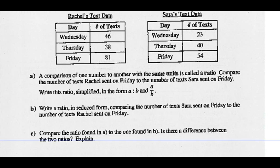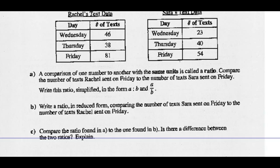So here's Rachel's and Sarah's text data. A says a comparison of one number to another with the same units is called a ratio. Same units, that's a ratio. Compare the number of texts Rachel sent on Friday to the number of texts Sarah sent on Friday and write this in the form A to B and in fractional form. So on Friday, Rachel sent 81 and Sarah sent 54. So 81 to 54, it wants it in a simplified form. So we can divide both these by 27 and we get 3 to 2. That's a simplified ratio form of A to B. In fractional form, that's 3 over 2.